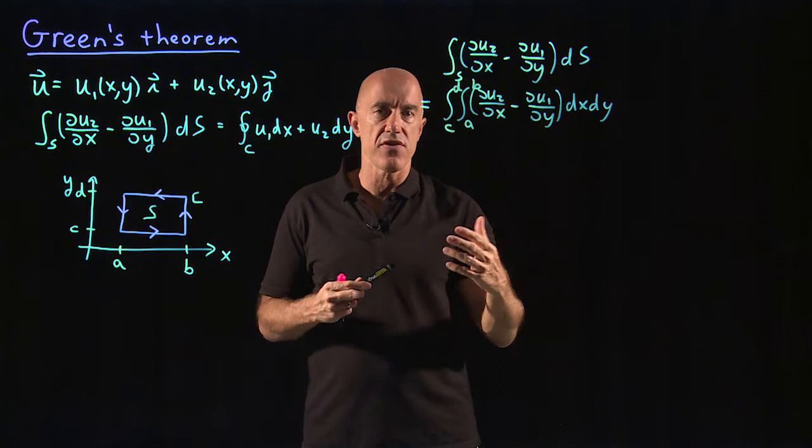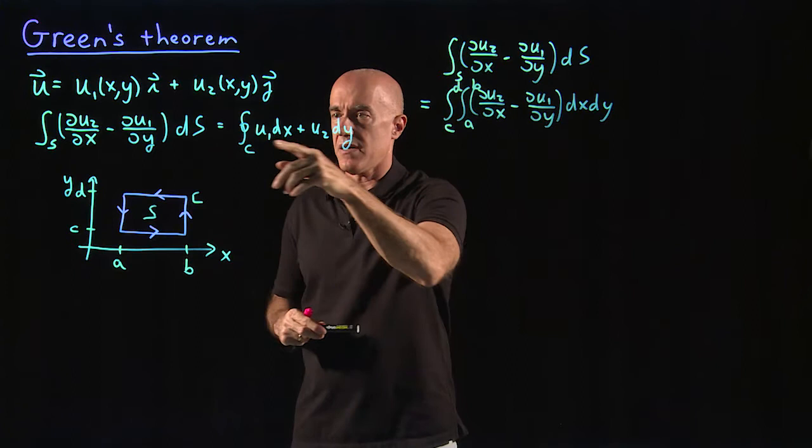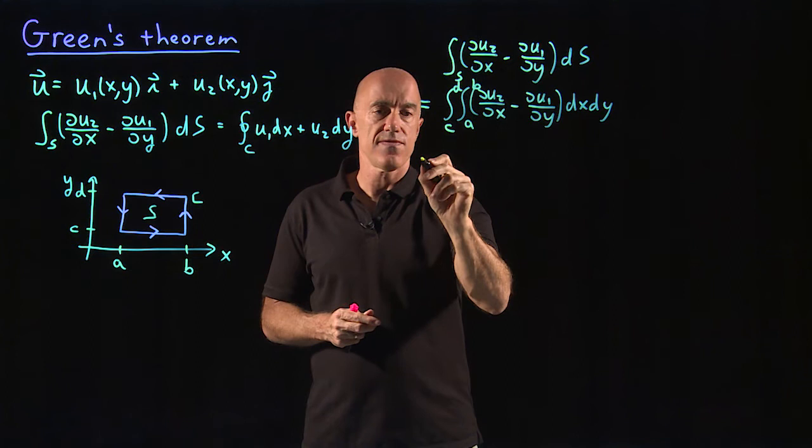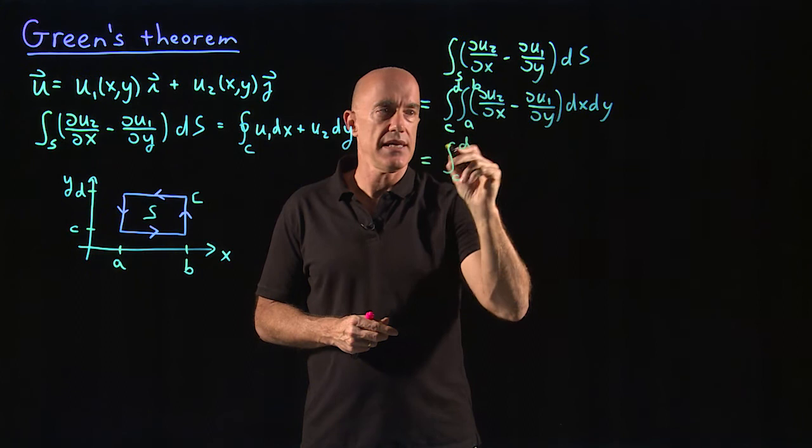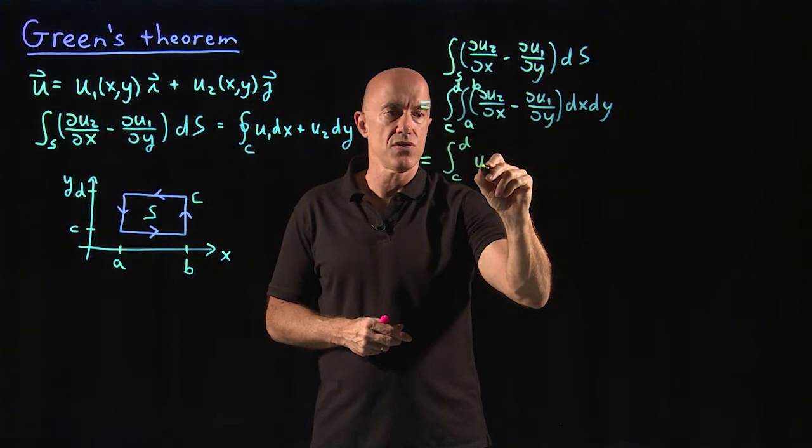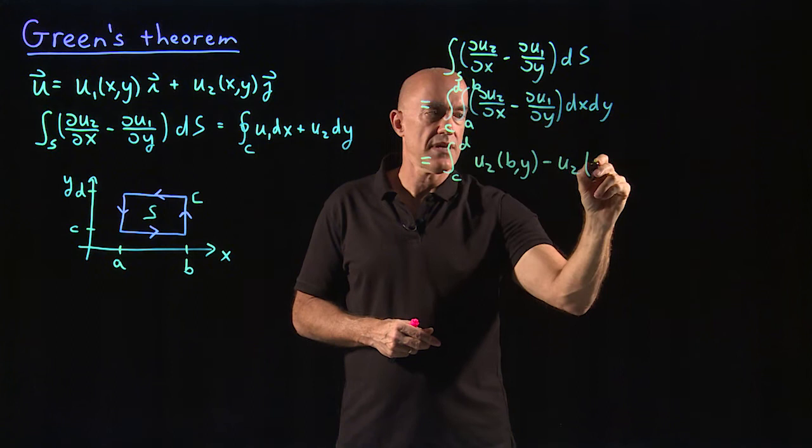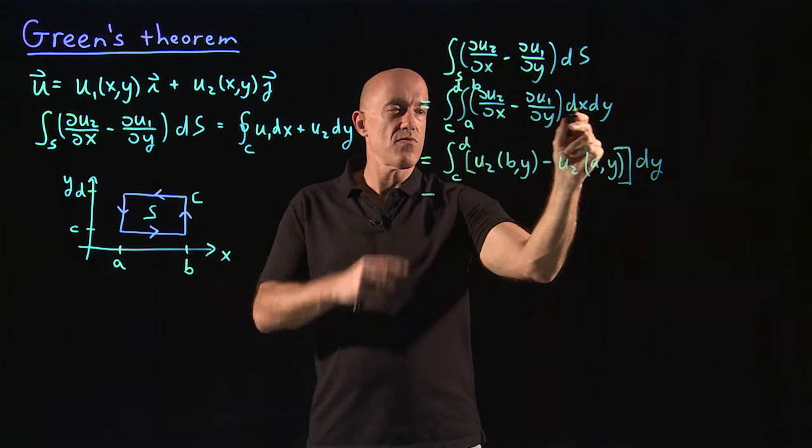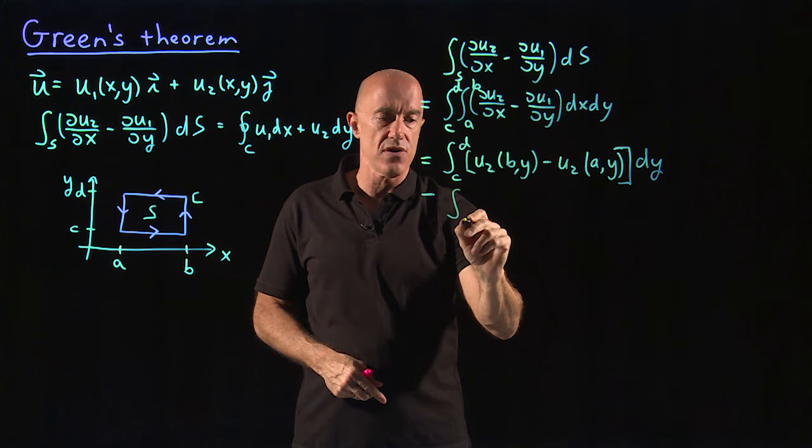This is a fundamental theorem, so we're going to use the fundamental theorem of calculus to remove one of these derivatives and lift it up into a curve integral instead of an area integral. So the du2/dx, we can integrate dx. So the first piece gets integrated dx. So we have the integral from c to d. Using the fundamental theorem, that will be u2 of x equals b, y, minus u2 of x equals a, y, dy dy.